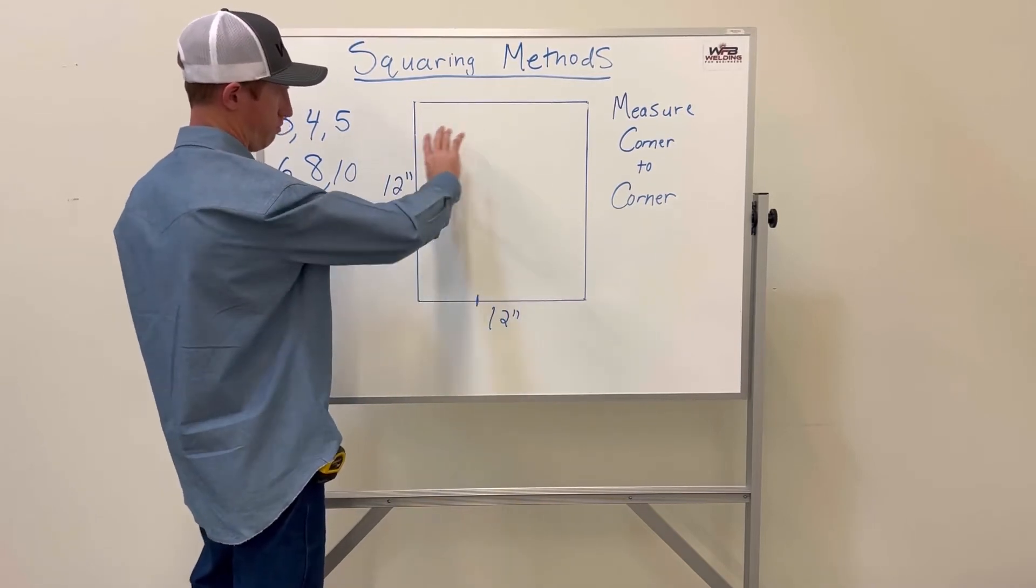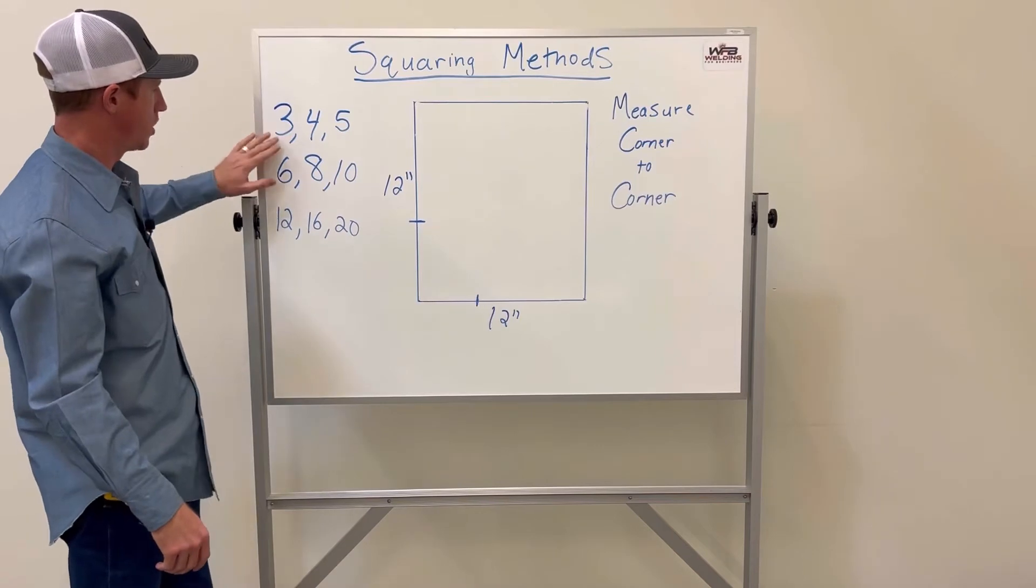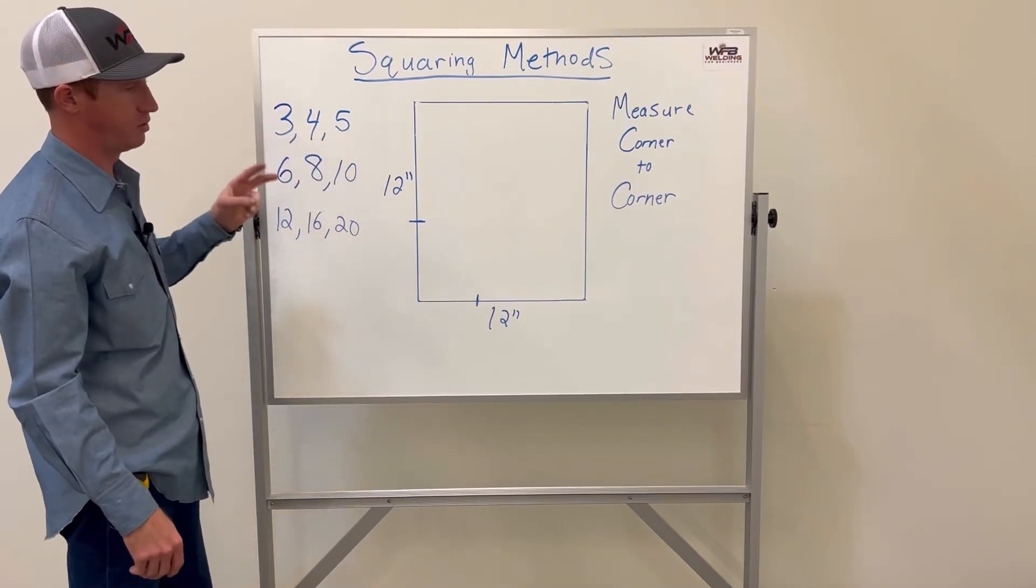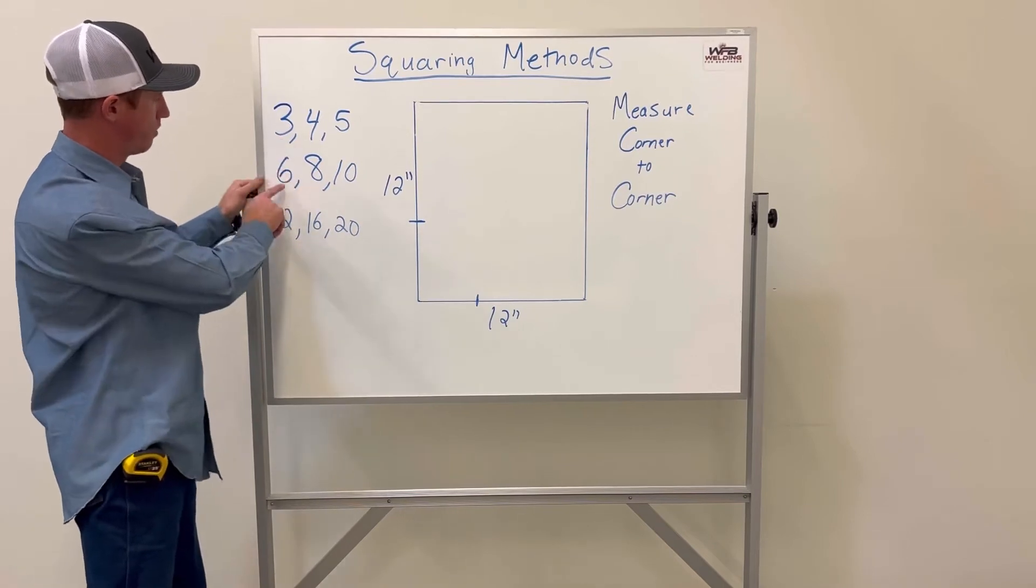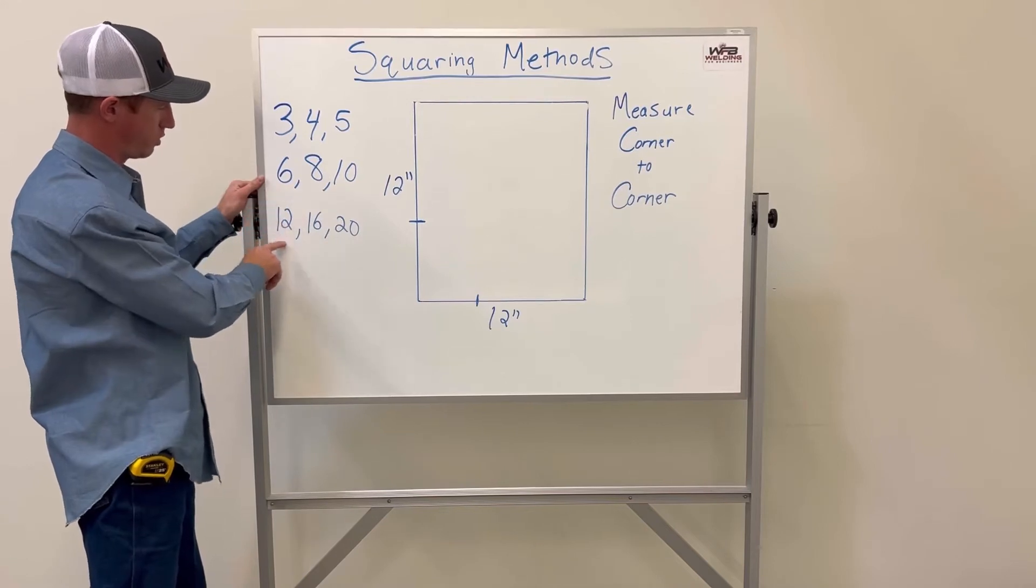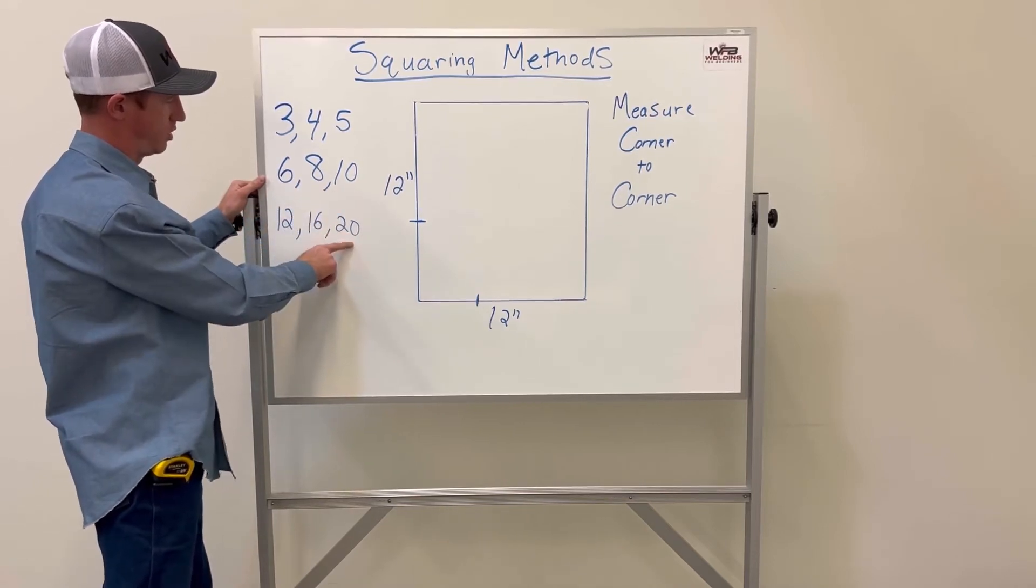You could always multiply these three digits by two. You could go from 3 to 6, 4 to 8, 5 to 10, and so on—6 to 12, 8 to 16, 10 to 20.